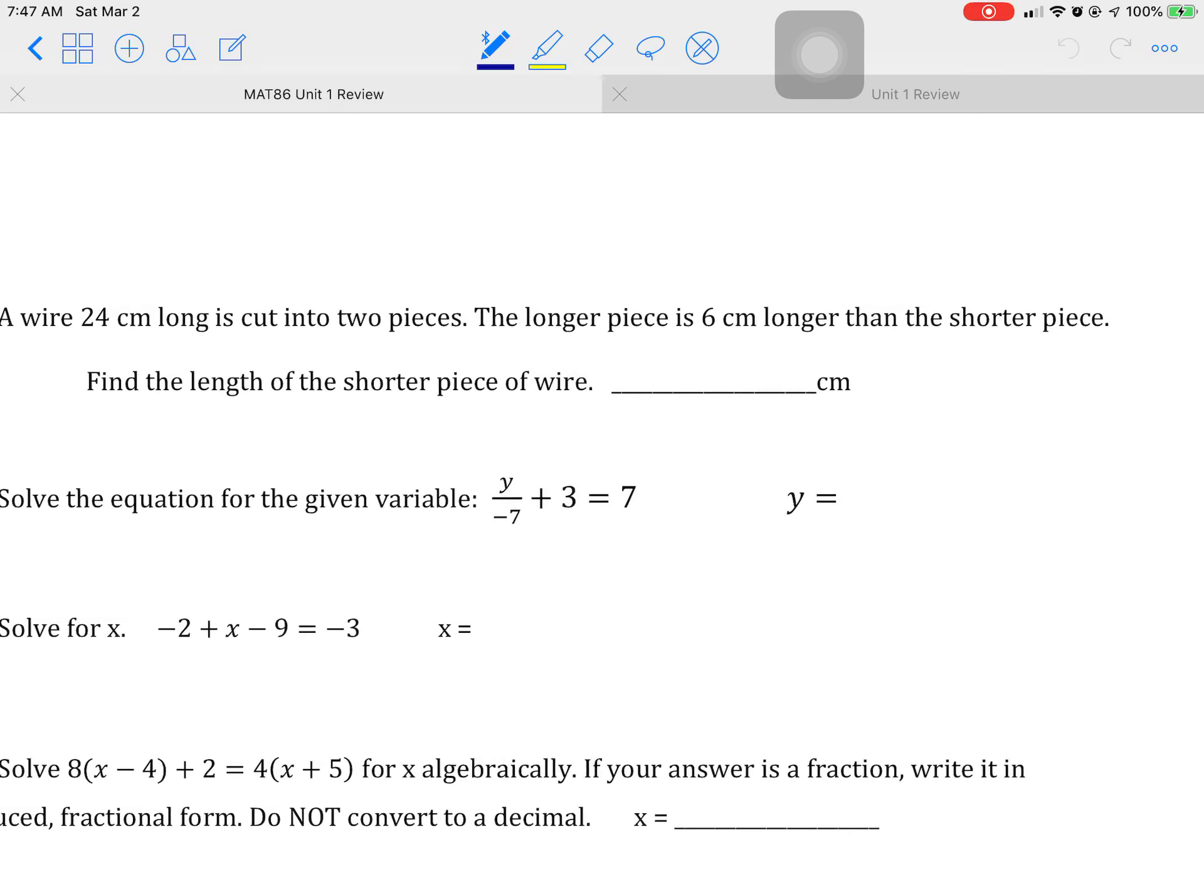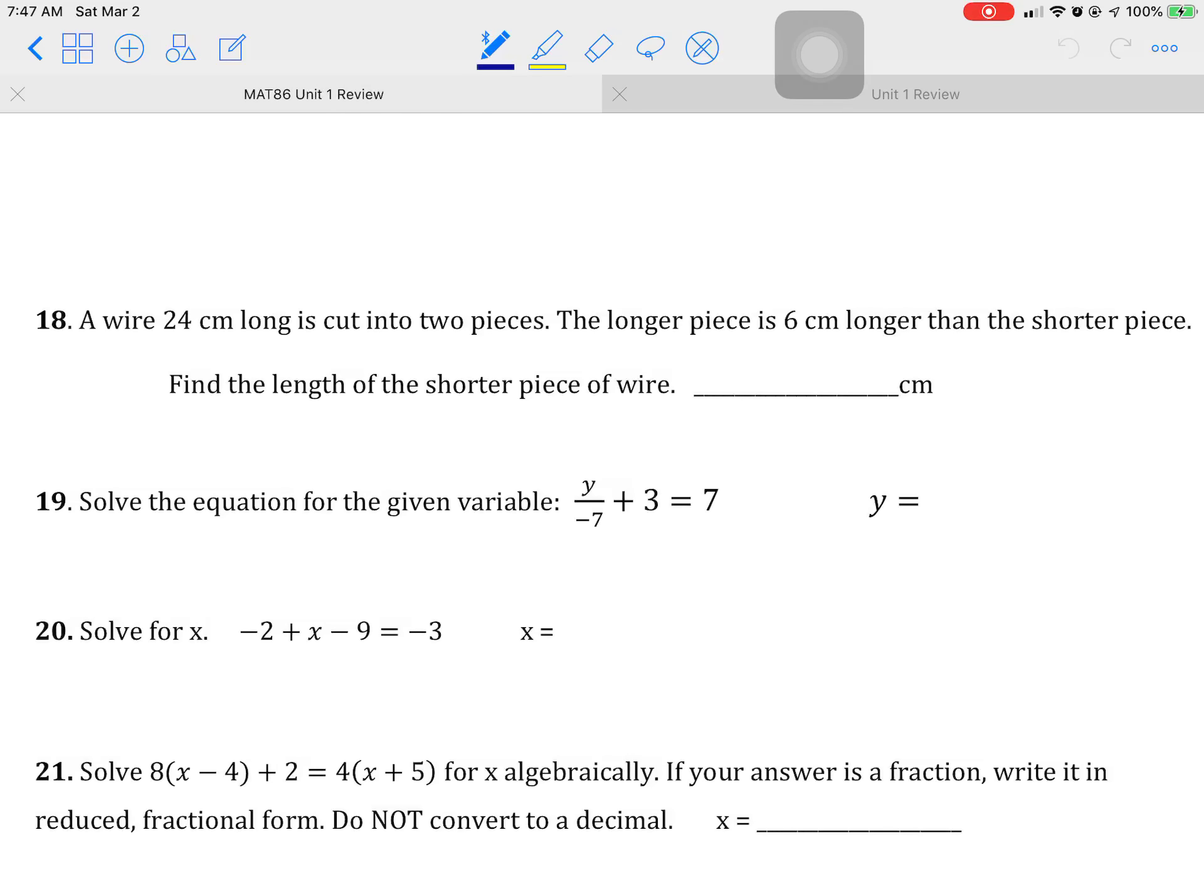Alright. Number 18, a wire is 24 centimeters long. Cut it into two pieces. So this is a part problem. The longer piece is 6 longer than the shorter. So the shorter is X. The other one is 6 longer. Find the length. So the equation that you need is adding these two together to equal 24.